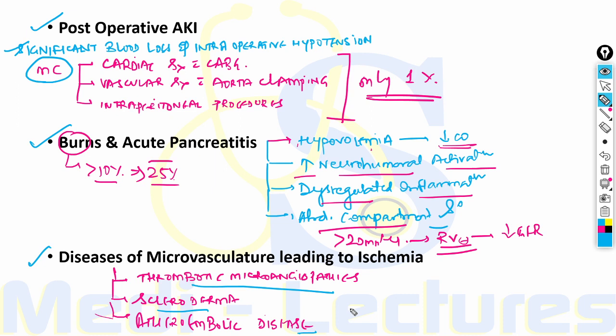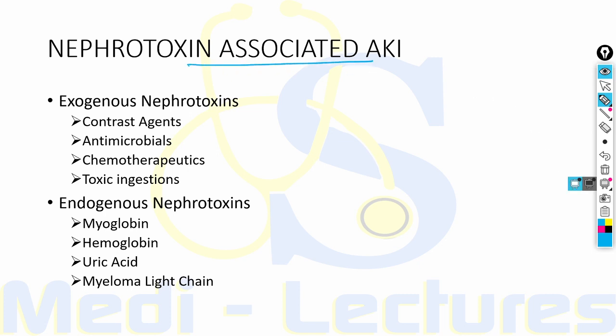Nephrotoxin-associated AKI can be due to exogenous nephrotoxins — contrast agents, antimicrobials, chemotherapeutics, and toxic ingestions — or endogenous nephrotoxins including myoglobin, hemoglobin, uric acid, and myeloma light chains. The kidney is highly susceptible to nephrotoxin-associated AKI due to its extremely high blood perfusion and concentration of circulating substances along the nephron.